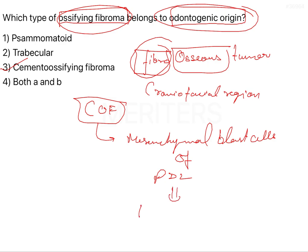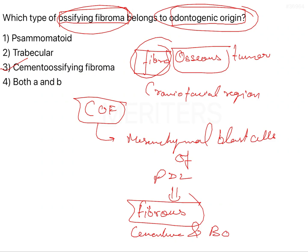Inside the bone, this will be changing the bony tissue into fibrous tissue in most cases. They can also form cementum and bone, or a combination of all such tissues as well. So if you histologically see, there can be bone formation, there can be cementum formation, and there can be a lot of fibre.